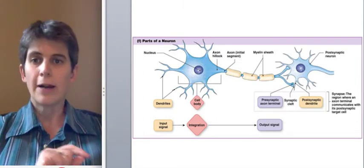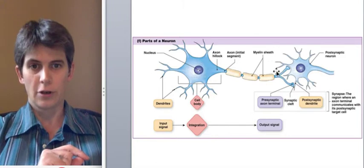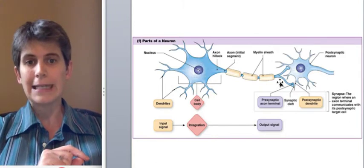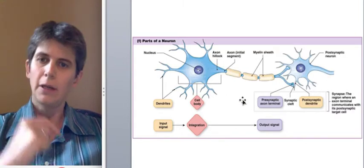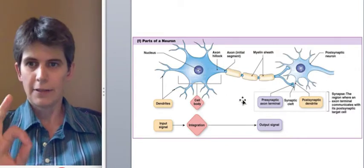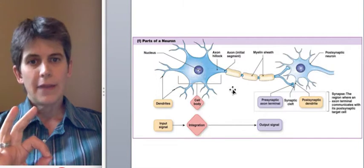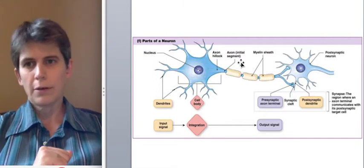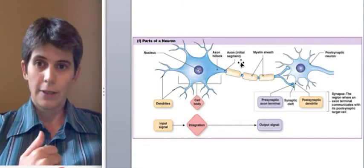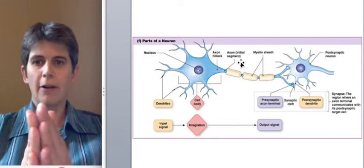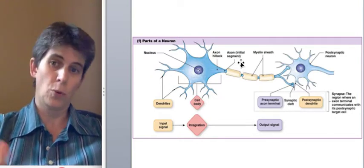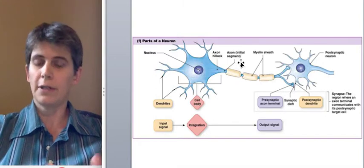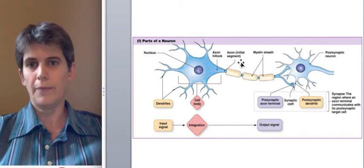To begin, you have to understand that action potentials occur primarily in the axons of neurons. So if you don't know the anatomy of a neuron, study it. It's very simple. The axon is the output part of a neuron whose job it is to carry an electrical signal like an electrical wire over a long distance, up to one meter in a person, and even longer in larger animals.